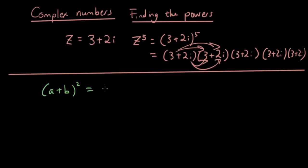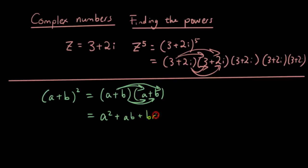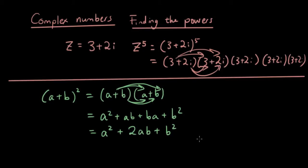If we expand that using the normal expansion, you're going to get a squared plus ab plus ba plus b squared, so you'll get a squared plus 2ab plus b squared. The coefficient in front of a squared is 1, the coefficient in front of b squared is 1, and the coefficient in front of ab is 2.